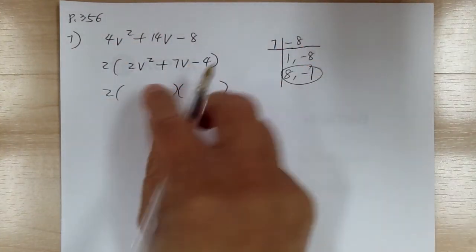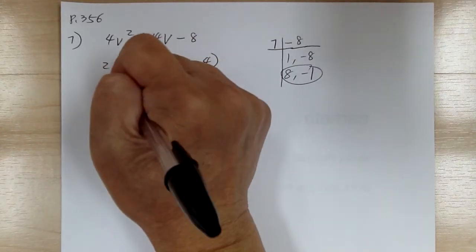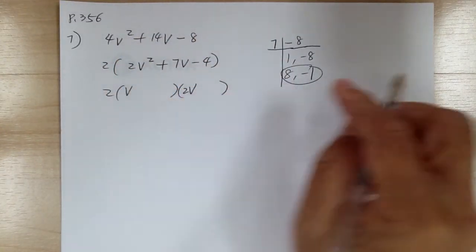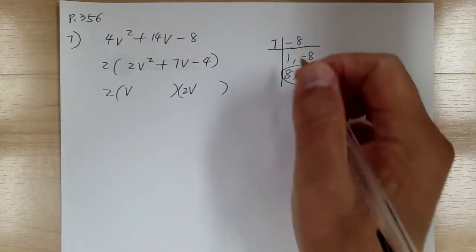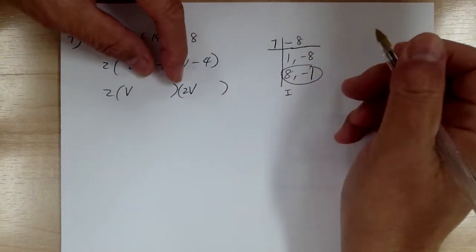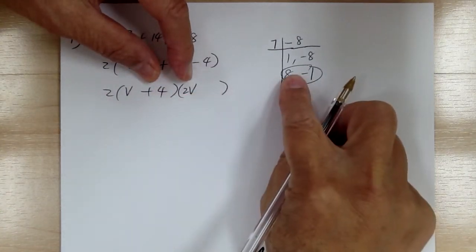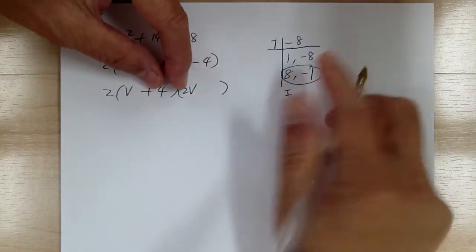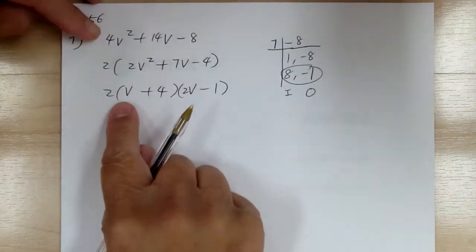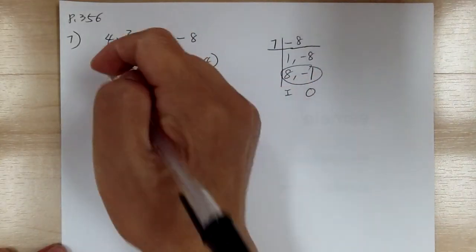Get two sets of parentheses. Break it down first: you need v and 2v — don't forget the 2. So the inside sign would be plus 4. Right, 2 times 4 gives you 8. The outside would be minus 1. So 1 times minus 1 gives you minus 1. And that's it.